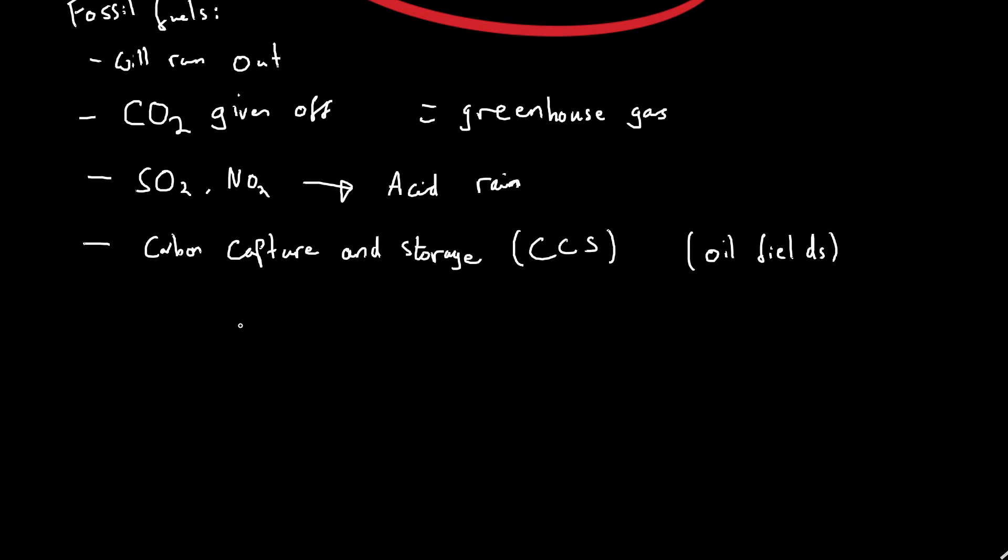And one of those, which we mentioned a couple of videos ago, is nuclear. Nuclear power. So if you remember, nuclear power does not involve the burning of fuels. The energy being released by nuclear power comes from the fission of the uranium or the plutonium. Now this might seem like a fantastic way to avoid the emission of these gases because we do not release greenhouse gases. So that's great. We're not releasing these greenhouse gases.